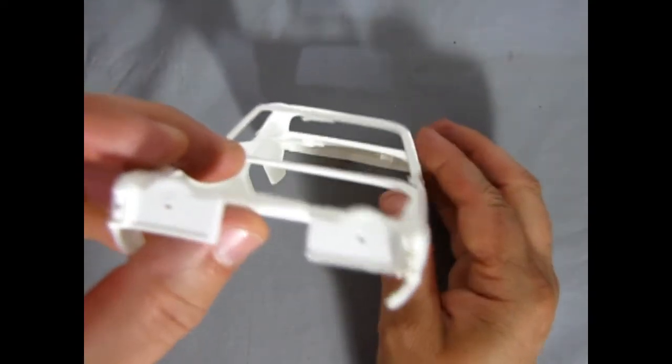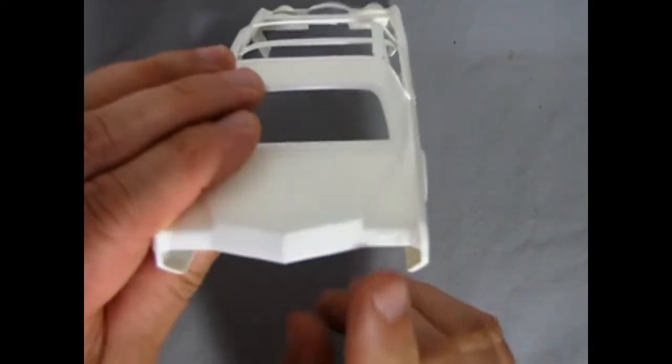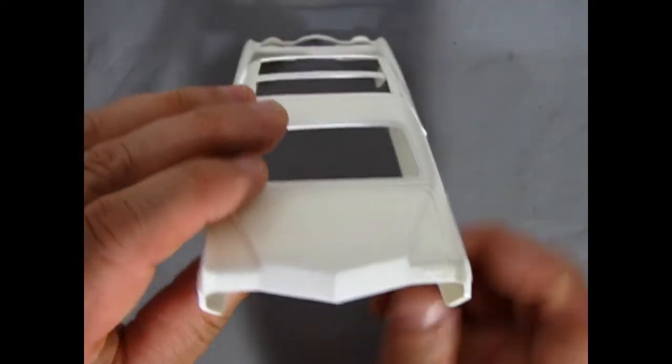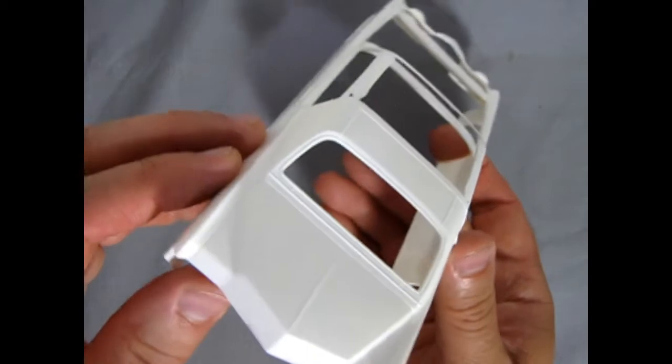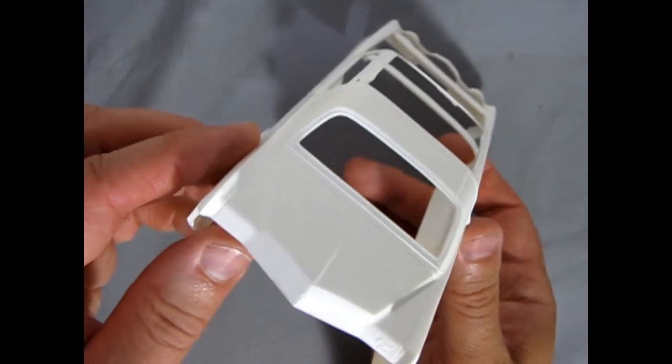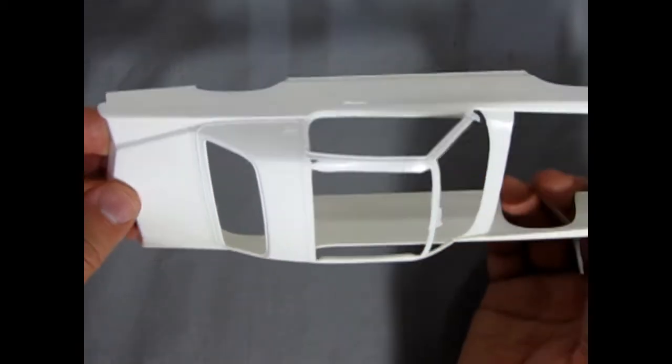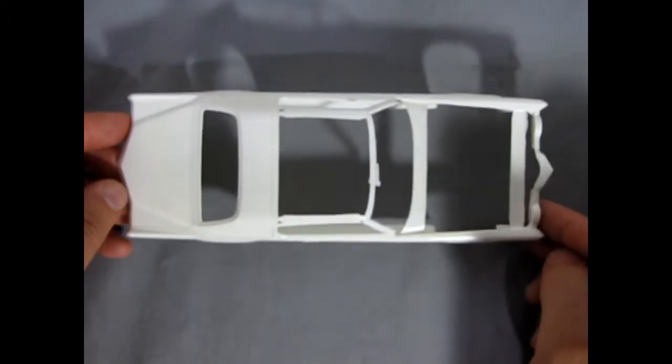And then as you go along the back you can see the Grand Prix logo right on the trunk lid. Again it does very much resemble the Eldorado but this is of course Pontiac version. And there we go.